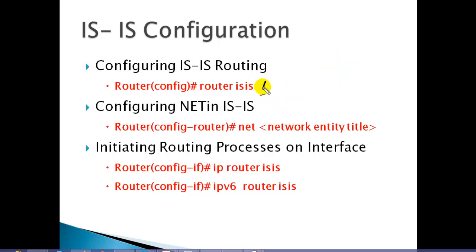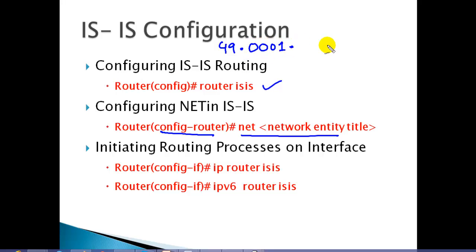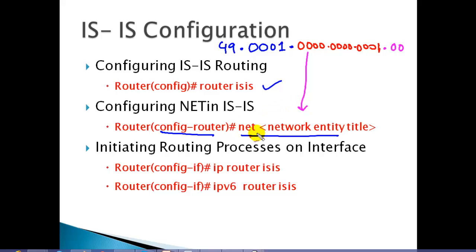The first command 'router isis' enables the protocol. Once you are in router mode, we need to configure the Network Entity Title (NET) address. It must start with 49 — a private-purpose AFI — then we define the area ID, then the system ID (any number you choose), and finally the NSEC selector address, which must always be 00. This address is defined inside router mode with the command 'net' followed by the address. Once you enable this, IS-IS starts working.